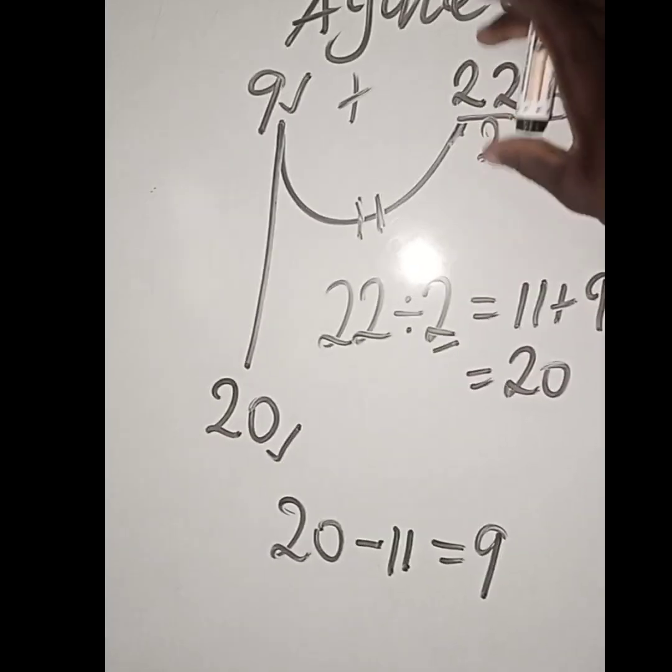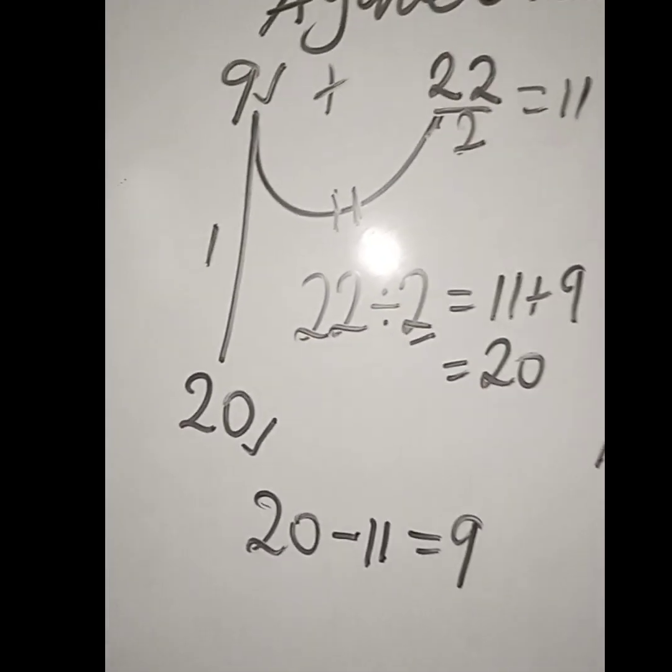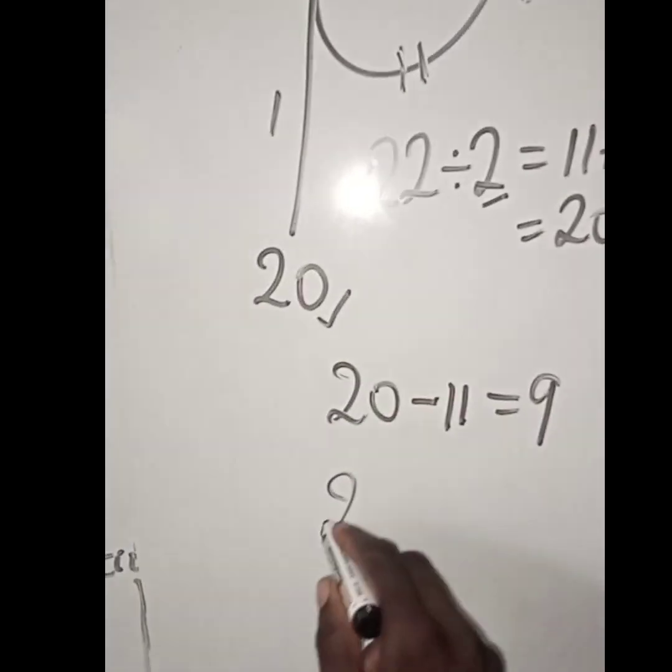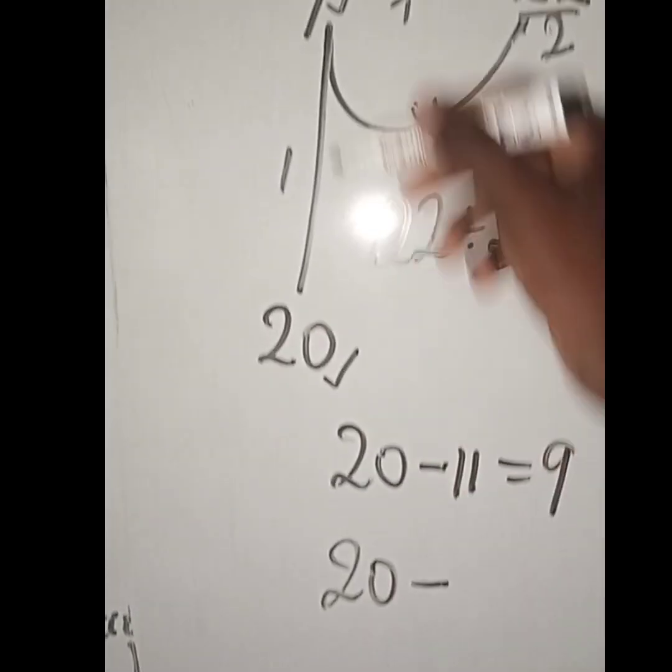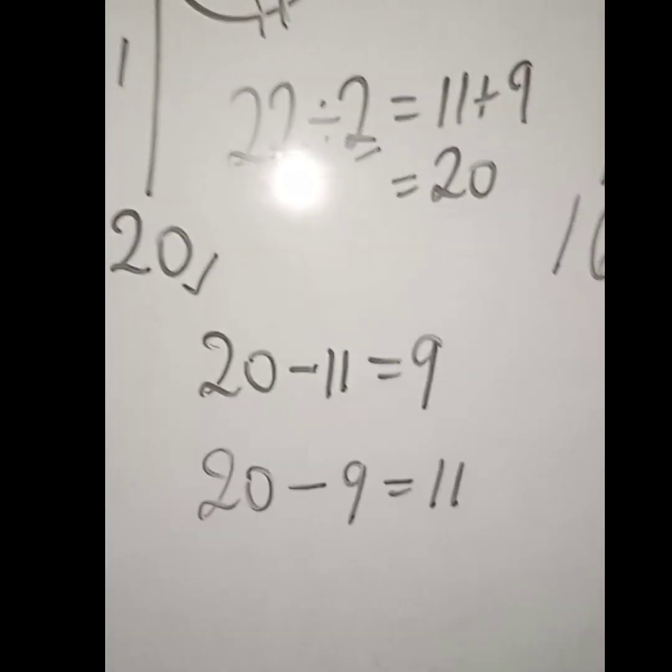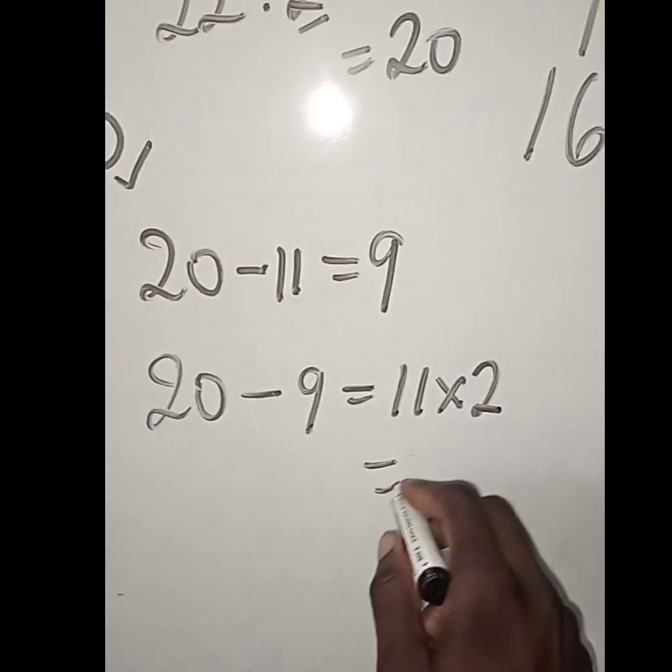If you want to get this 22, we are going to subtract. Just do 20, the 20 down, minus the 9 up, which will give you 11. So 11 times 2 will give you 22.